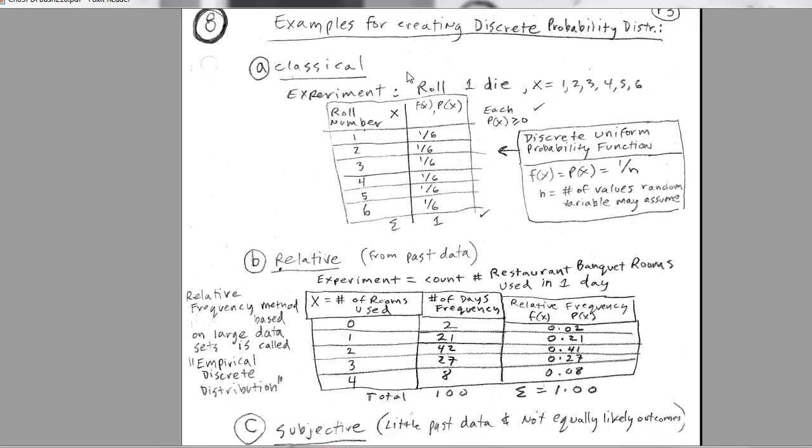Now, we want to scroll down and talk about the methods of assigning probability. Well, just as you might suspect, last chapter we learned about classical, relative, and subjective. Well, you can use those three methods for creating discrete probability distributions. Classical: if we had an experiment, roll one die. These are our only outcomes. This would be our random variable x. We'd list it here and assign probabilities. Now, notice, this is one of those cases where they're all the same. This actually has a special name, discrete uniform probability distribution, and the probability function is 1 divided by the number of values that the random variable may assume.